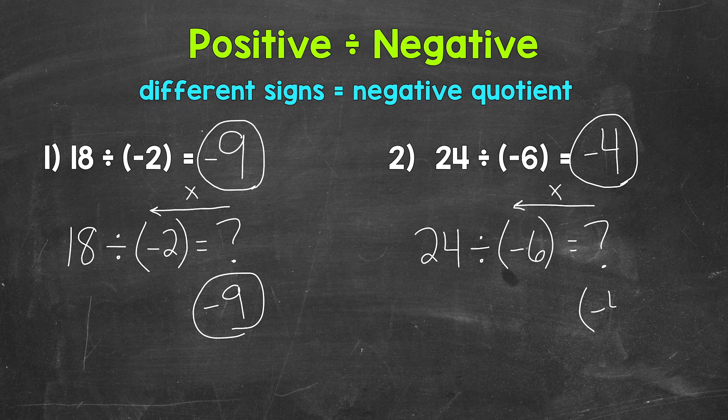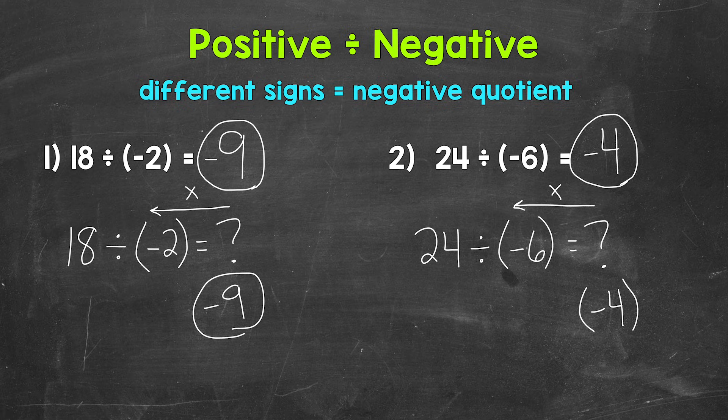negative 4. Negative 4 times negative 6 gives us that positive 24. And negative times a negative equals a positive.